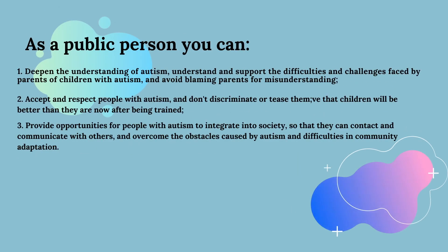If you have no direct connection to an autistic person but still want to make a change, you can: one, deepen your understanding of autism, understand and support the difficulties faced by parents of children with autism, and avoid blaming parents out of misunderstanding; two, accept and respect people with autism and don't discriminate or tease them; and three, provide opportunities for people with autism to integrate into society so they can contact and communicate with others and overcome obstacles caused by autism and difficulties in community adaptation.